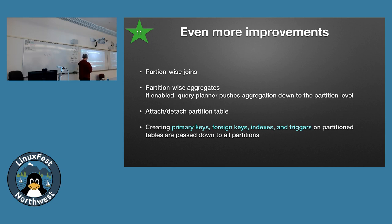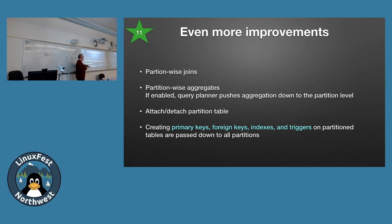There are also improvements for joins — the query planner is smarter and faster with aggregates on partitions. As a summary: primary keys, foreign keys, indexes, and triggers can now be defined on the master table. Before, you had to create an index on each individual partition table, and you had to remember to add indexes whenever you added new partitions. Now in 11, all of that is done automatically — if you define it on the parent table, it propagates to all partitions. Much simpler.